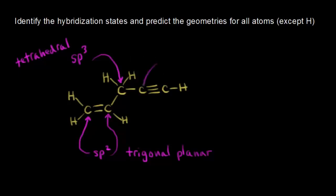Let's move over to this carbon right here. This carbon has a triple bond on the right side of it. The fast way: if it has a triple bond, it must be sp hybridized. Therefore, the geometry would be linear with a bond angle of 180 degrees. Same with this carbon — it also has a triple bond, so it must be sp hybridized with linear geometry. That's why those two carbons are drawn as linear.